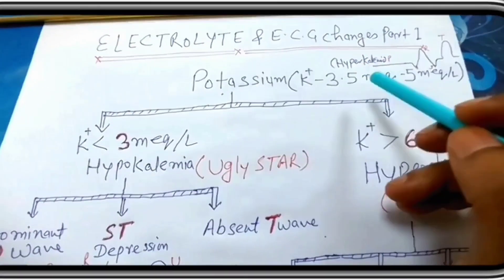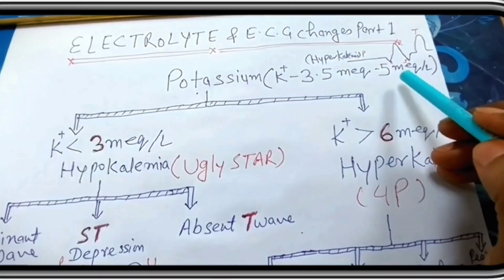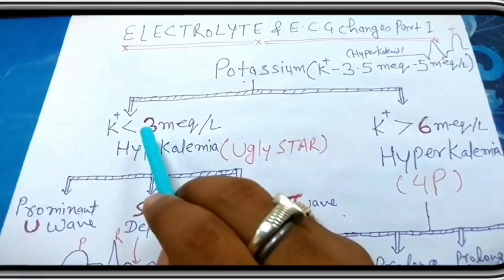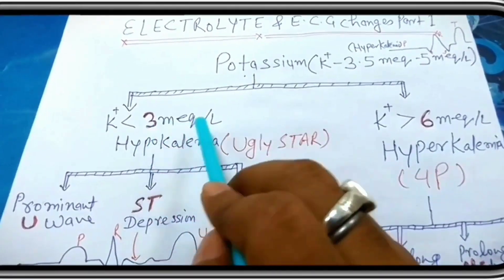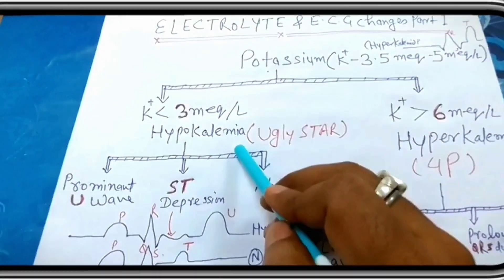The normal level of potassium is 3.5 milliequivalent to 5 milliequivalent per liter. When potassium level is less than 3 milliequivalent per liter, the condition is called hypokalemia.